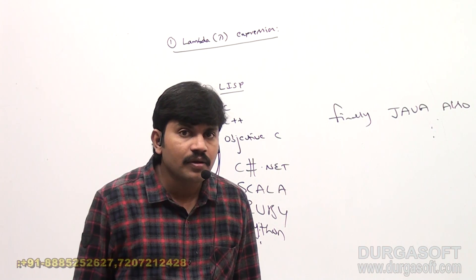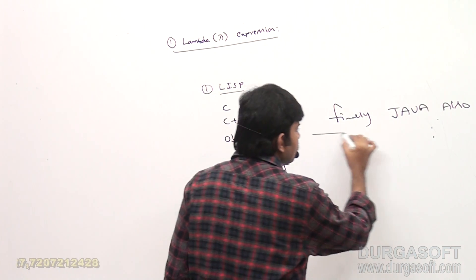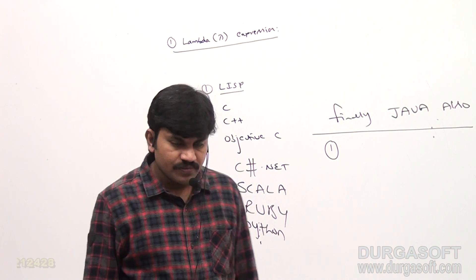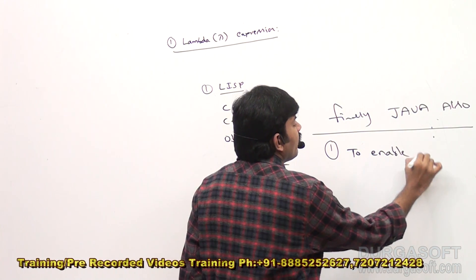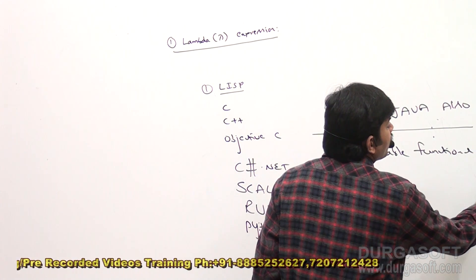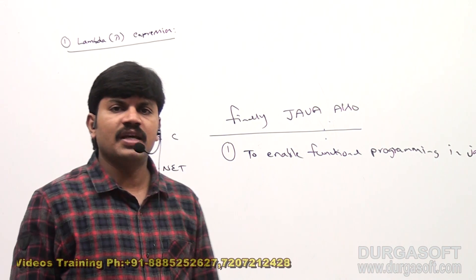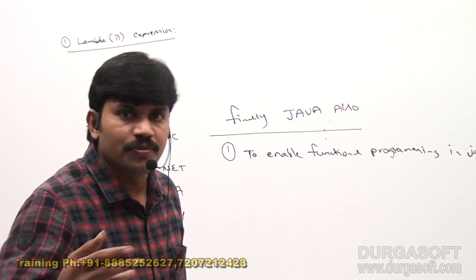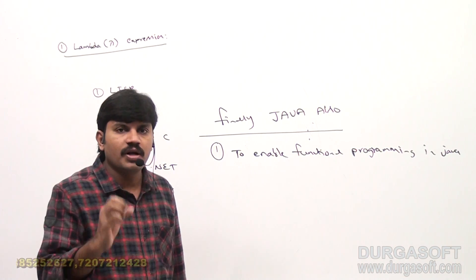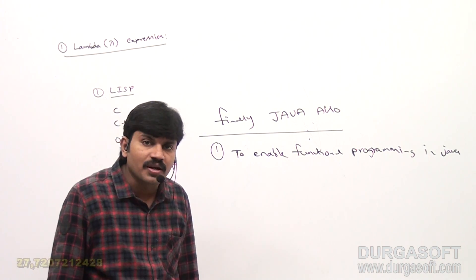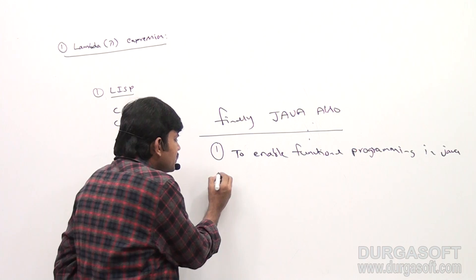At a very top level, what are the benefits of using lambda expressions in Java? The first biggest benefit is to enable functional programming in Java. You can use a procedure directly as a variable, send the procedure as an argument, and send behavior as an argument. These things are possible with lambda expressions. So the main objective of lambda expressions is to enable functional programming in Java.